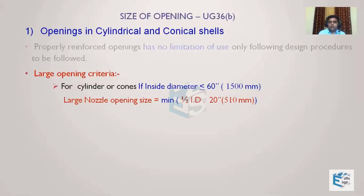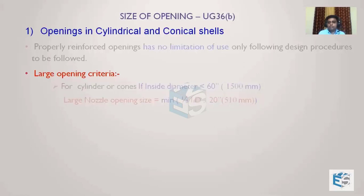For ID less than 1500mm, the large opening criterion is the minimum of half the ID or 510mm, whichever is smaller. If your nozzle opening exceeds this value, it is classified as a large opening. Let's take an example to understand this better.